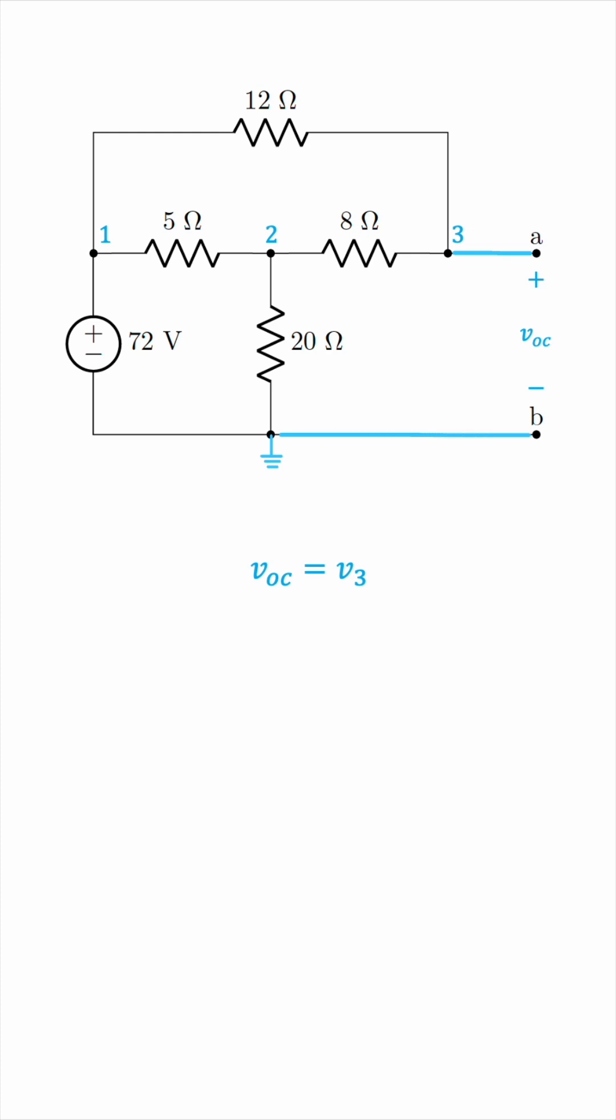With that in mind, let's use the node voltage method, which I already have a couple of videos on, to find V3, and doing so, we would have the open circuit voltage, which will give us the Thevenin voltage.